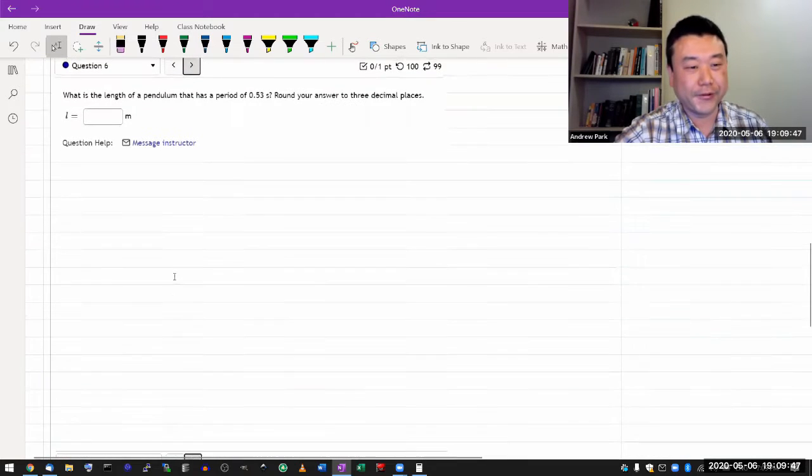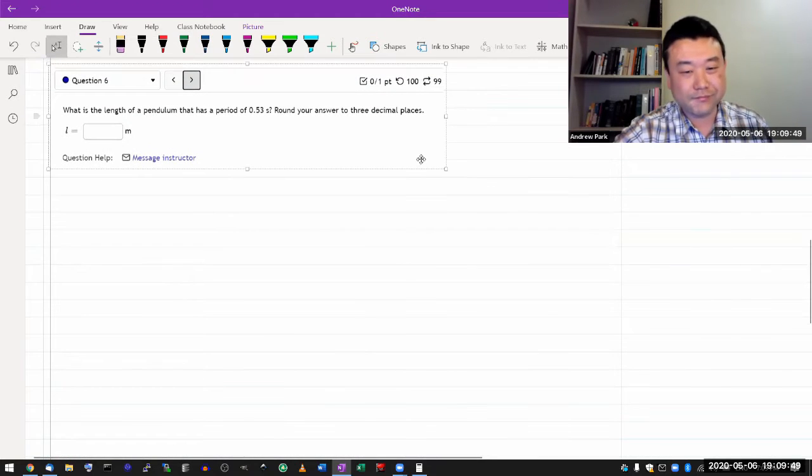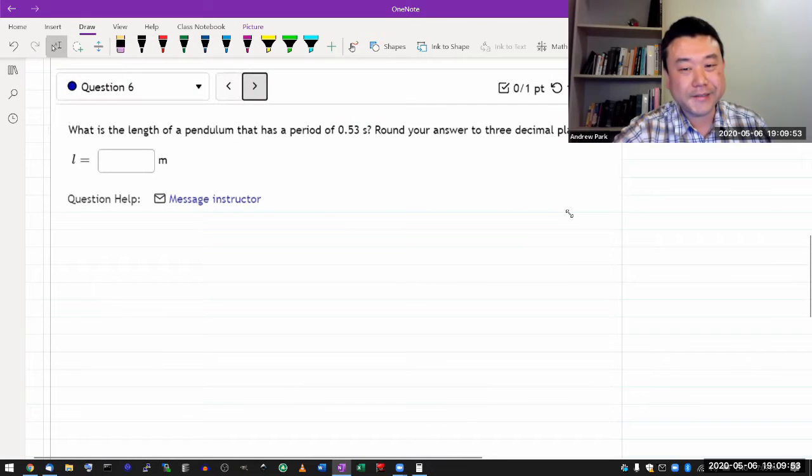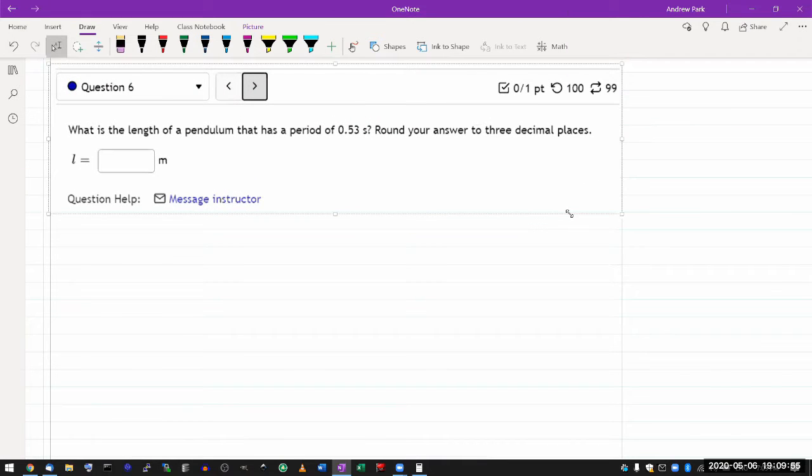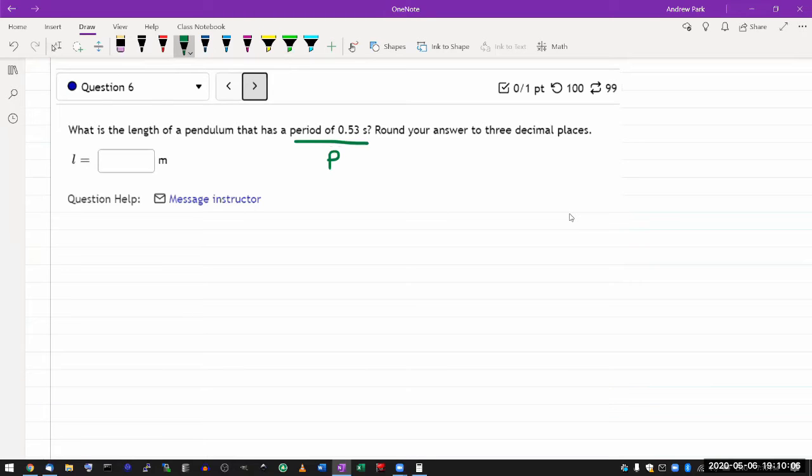This is another one of those where to answer it you just need to have the formula memorized. The question is asking for the length of a pendulum that has a period of 0.53 seconds. How does period have anything to do with the length? This is where you have to know the formula.